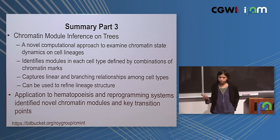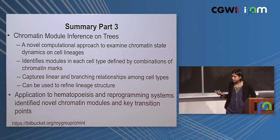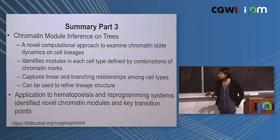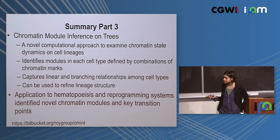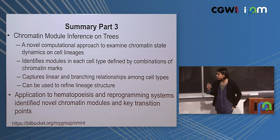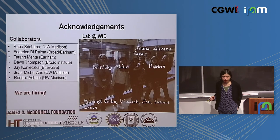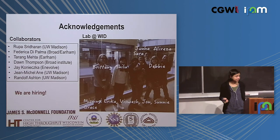To conclude, I've talked about different ways to look at regulatory networks in evolutionary and developmental lineages. In the developmental context, we are primarily looking at chromatin modules across different cell types, but we are interested in bringing back the regulatory network by inferring cell-type-specific networks. Thank you.